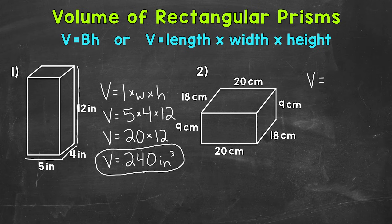Volume equals length times width times height. So now we need to plug in the length and width of our base. So for the length, I'm going to use the longer dimension here of 20 centimeters. And then for the width, I'm going to use the shorter dimension here of 18 centimeters. So let's plug those in.